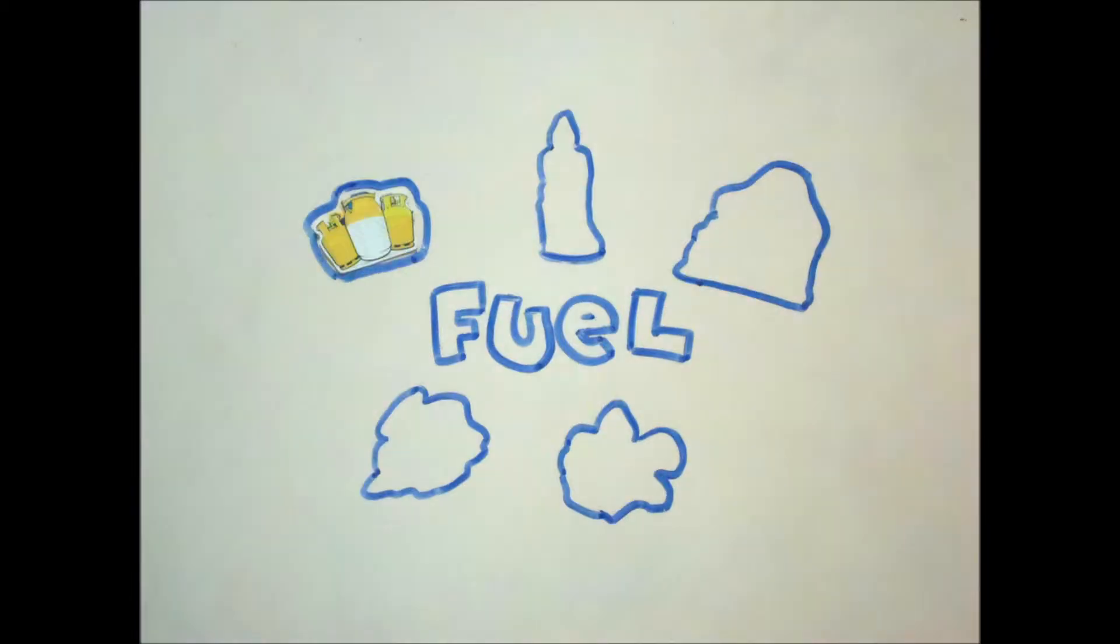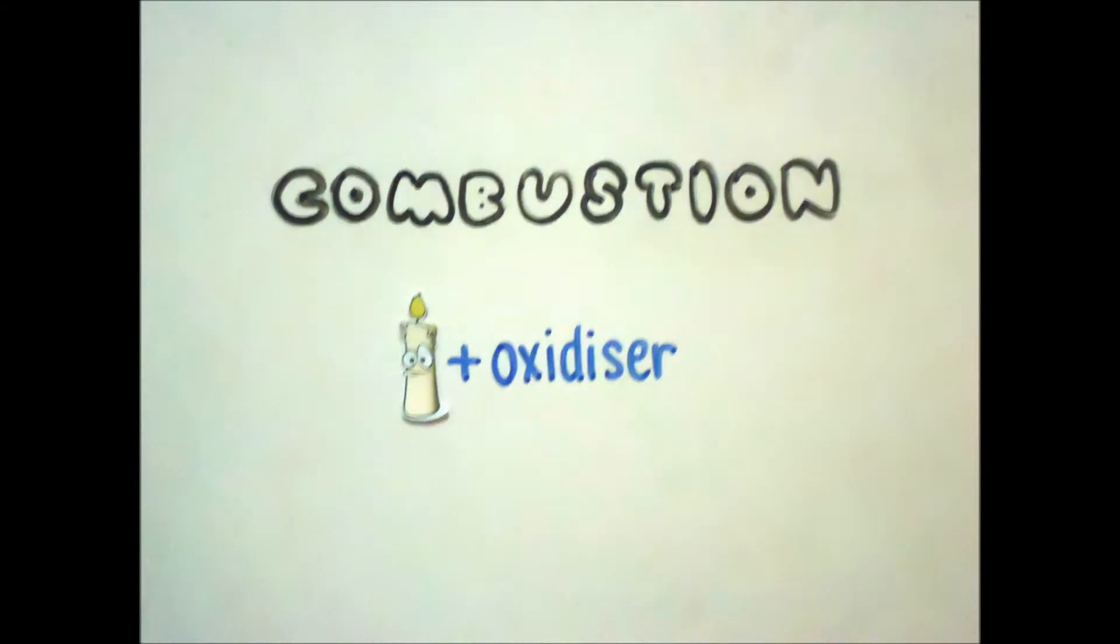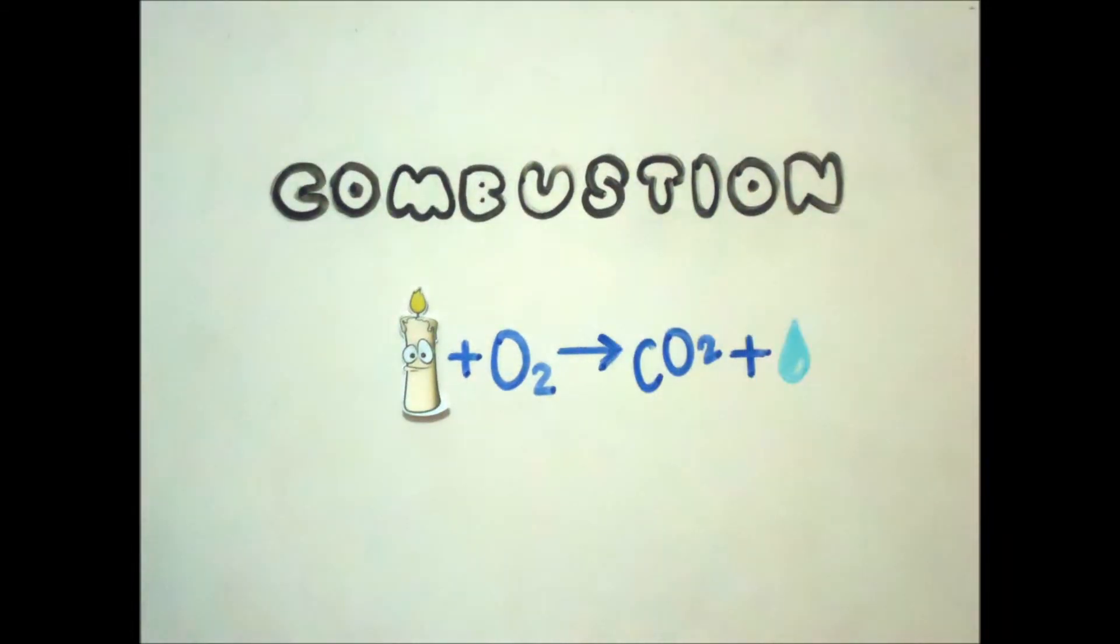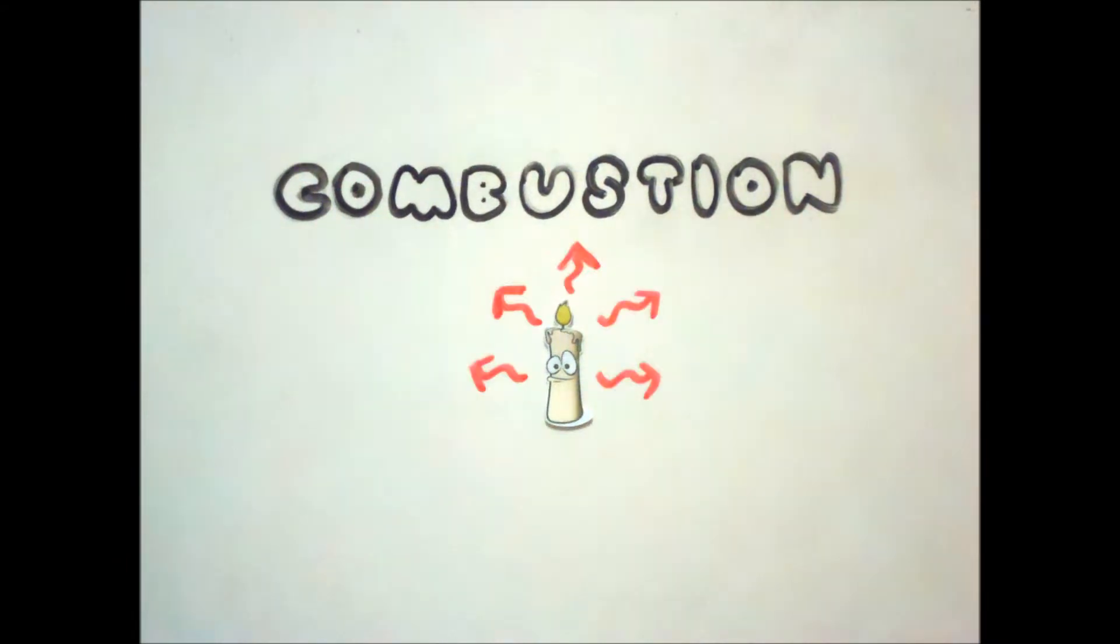Let's get back to basics. Fuel is any substance containing chemical potential energy that may be combusted to produce heat or other forms of energy. Combustion is an exothermic chemical reaction between a fuel and an oxidant, usually oxygen, which in most cases produces carbon dioxide and water, and converts the fuel's excess chemical potential energy to heat and light energy in the form of flame.